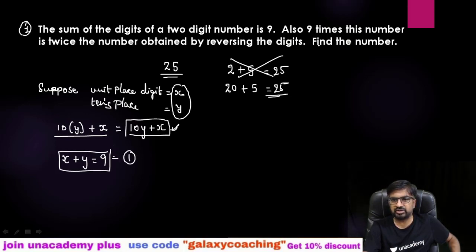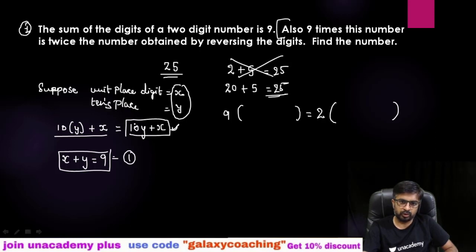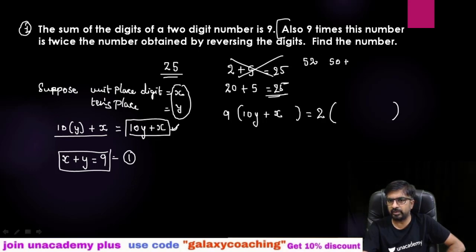Now also nine times this number means this full number. Nine times this given number equals two times the reverse number. Now here you need to understand from this, nine times this number, this whole number when you want to write down you need to write down 10y + x is the given number. Nine times the given number will be equals to two times the reverse number. So what will be the reverse number? The reverse number of 25 is 52. So your expanded form will be 50 plus 2. So here also the x and y will change. So here you will get 10x + y because now your unit digit becomes tens place digit and tens place digit becomes unit place digit.